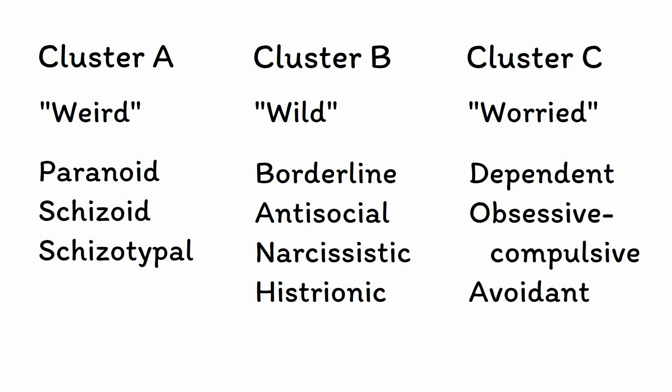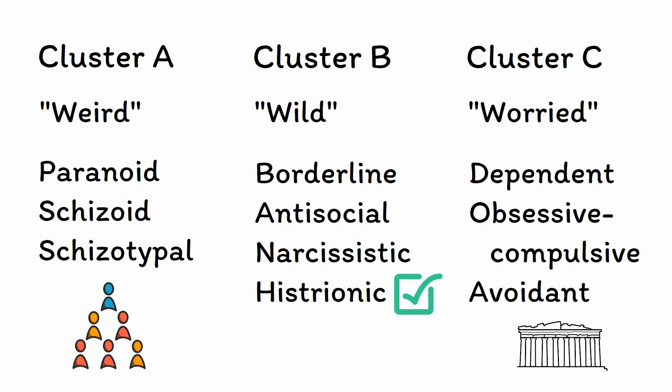For the most part, these clusters are based more on superficial resemblances between the disorders than on actual shared pathological processes. The main exception to this is Cluster B, as the four disorders in this cluster do appear to have a common underlying pathology. For Clusters A and C, however, any similarities between the disorders are only surface level, with few shared diagnostic patterns or underlying causes to be found. So when learning about the personality disorder clusters, keep in mind that these clusters are largely based on tradition rather than science.